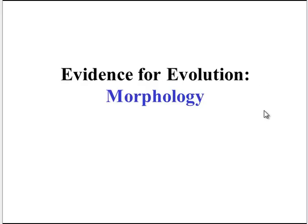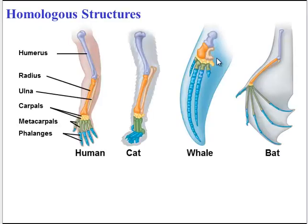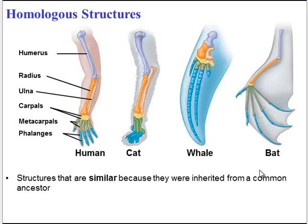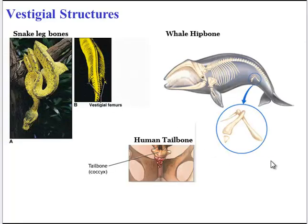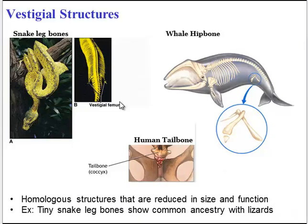This is where another type of evidence — morphology — becomes critical. Morphology is the comparison of body structures. Homologous structures are structures that are similar because they were inherited from a common ancestor. The limbs of these four species are homologous and show evidence of divergent evolution, meaning they diverged from one ancestor. Vestigial structures are a specific type of homologous structure — they are reduced in size and function. For example, inside a snake you would see tiny little leg bones.